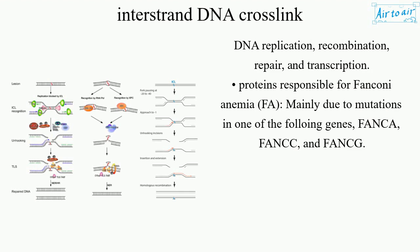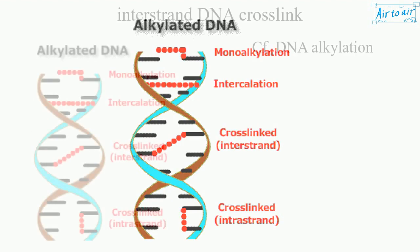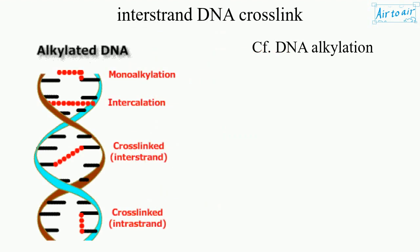Proteins responsible for Fanconi anemia are mainly due to mutations in one of the following genes, including FANCG. CFDNA alkylation is also implicated.